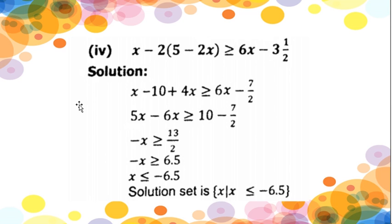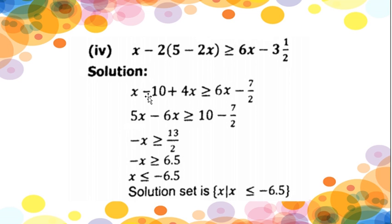Now moving to question 1 part 4: (x - 2)(5 - 2x) is greater than or equal to 6x - 3½. We will apply the distributive law. If anything is multiplying outside the bracket, it multiplies with all the values. So: x - 10, and due to the negative sign all signs inside the bracket change — so +5 becomes -5 and -2x becomes +4x. This mixed number I will change into a fraction: 2×3 = 6, plus 1 equals 7/2.